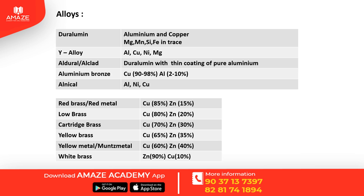The next topic is alloys. An alloy is a combination of two or more metals. Duralumin contains copper with traces of magnesium, manganese, silicon, and iron. An alloy of aluminum, copper, nickel, and magnesium is called Y-alloy. Alclad or aldural is duralumin with a coating of pure aluminum.